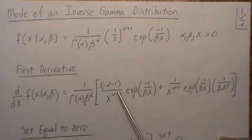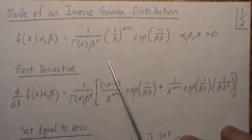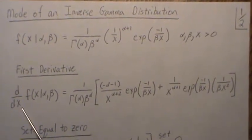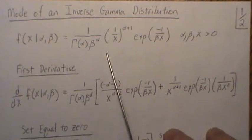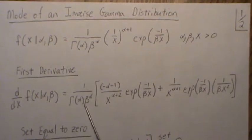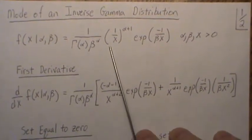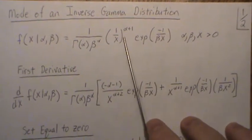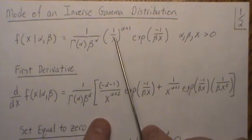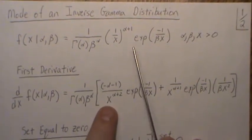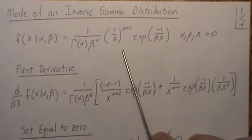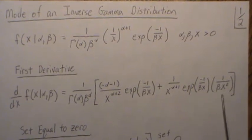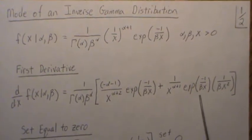Now to find the mode we take the derivative and then find its maximum, which is the mode. So if we take the derivative, this is a constant so we'll pull it out front. With respect to X we have two functions, so we take the derivative of this times that, plus this times the derivative of that, and don't forget the chain rule associated with this.